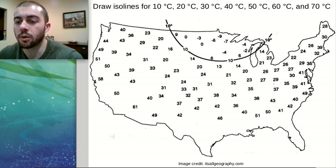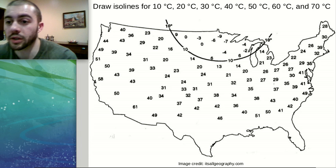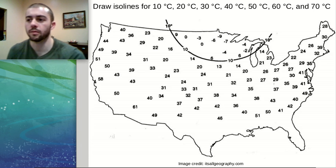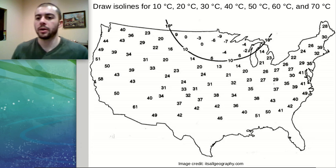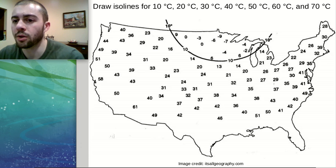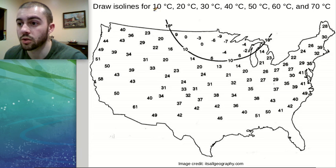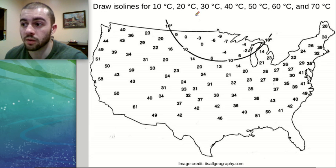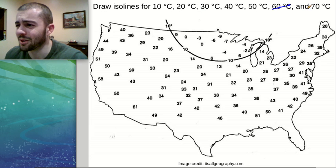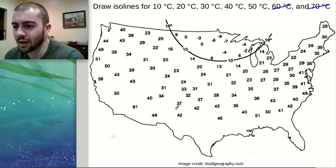Alright, so in this video we're going to do another quick example of drawing isolines on a map. This one's going to be a little more complicated than the last one because we don't have exactly even values. We're going to be drawing isolines for 10, 20, going up by intervals of 10. In the last video we did 60 and 70, but those aren't really going to apply as much in this map.